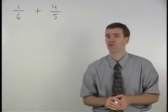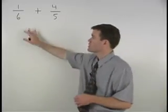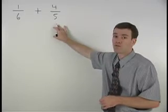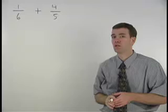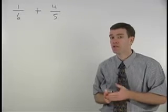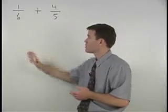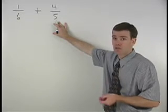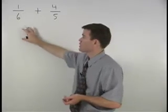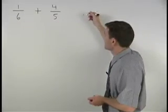To add these two fractions together, one-sixth plus four-fifths, we need a common denominator. The common denominator is simply the least common multiple for the two denominators. So here our first step is to find the least common multiple for six and five.